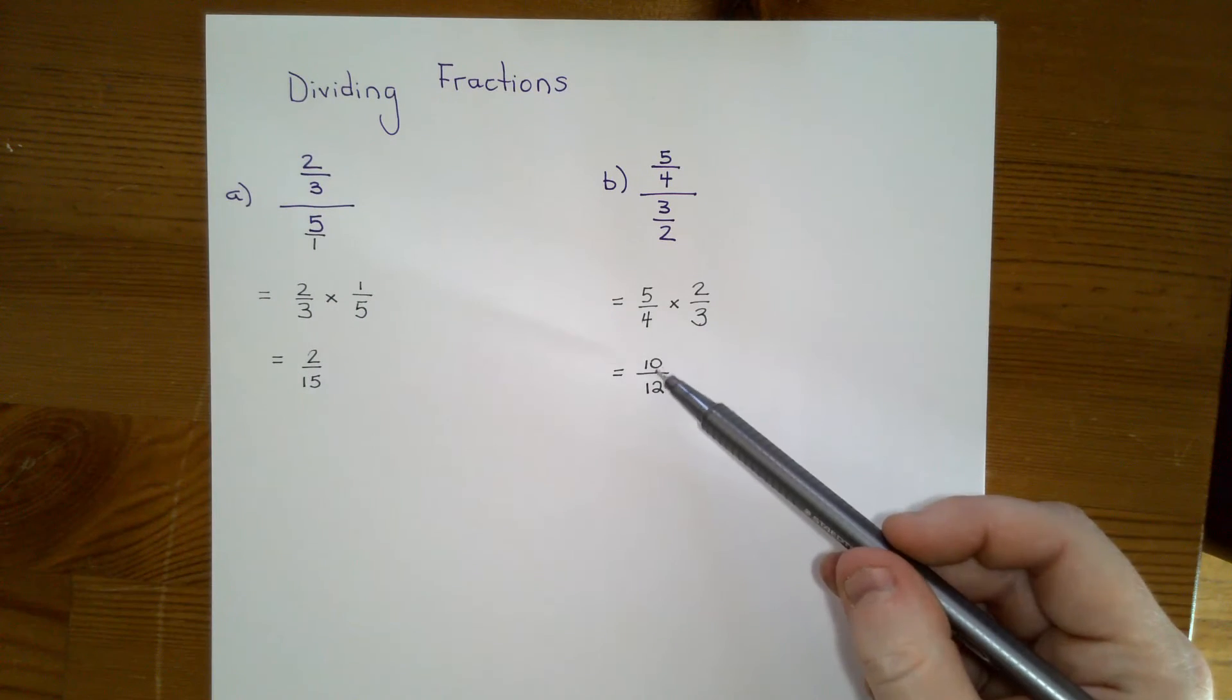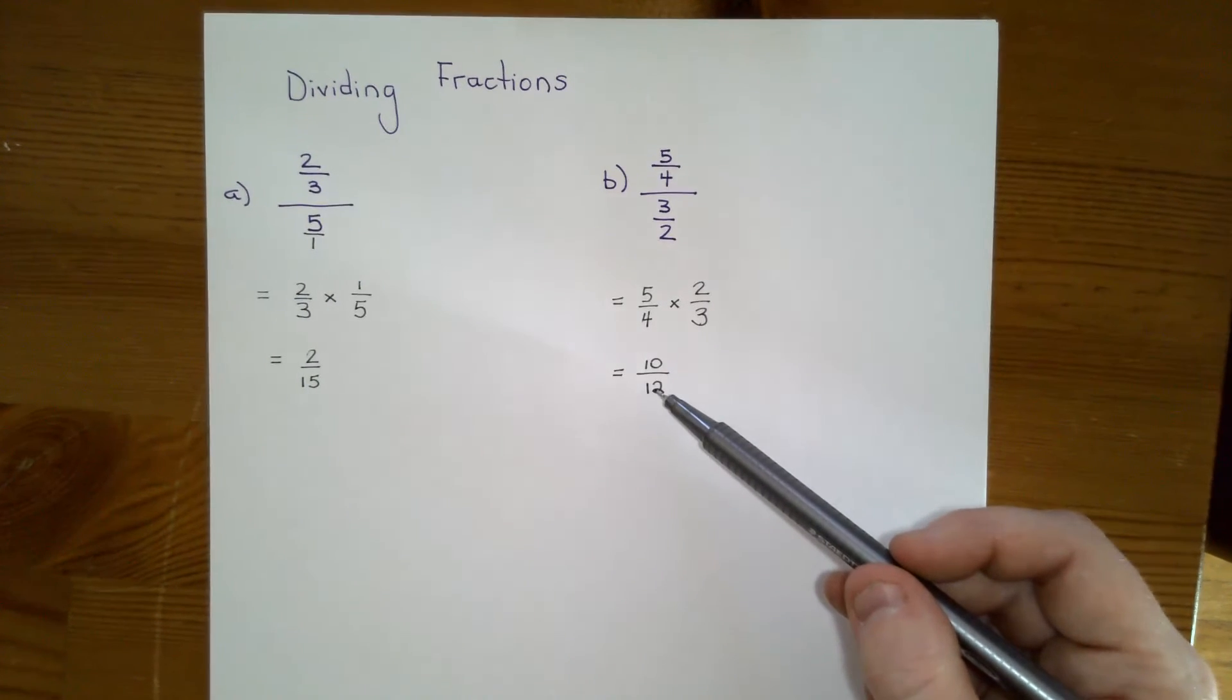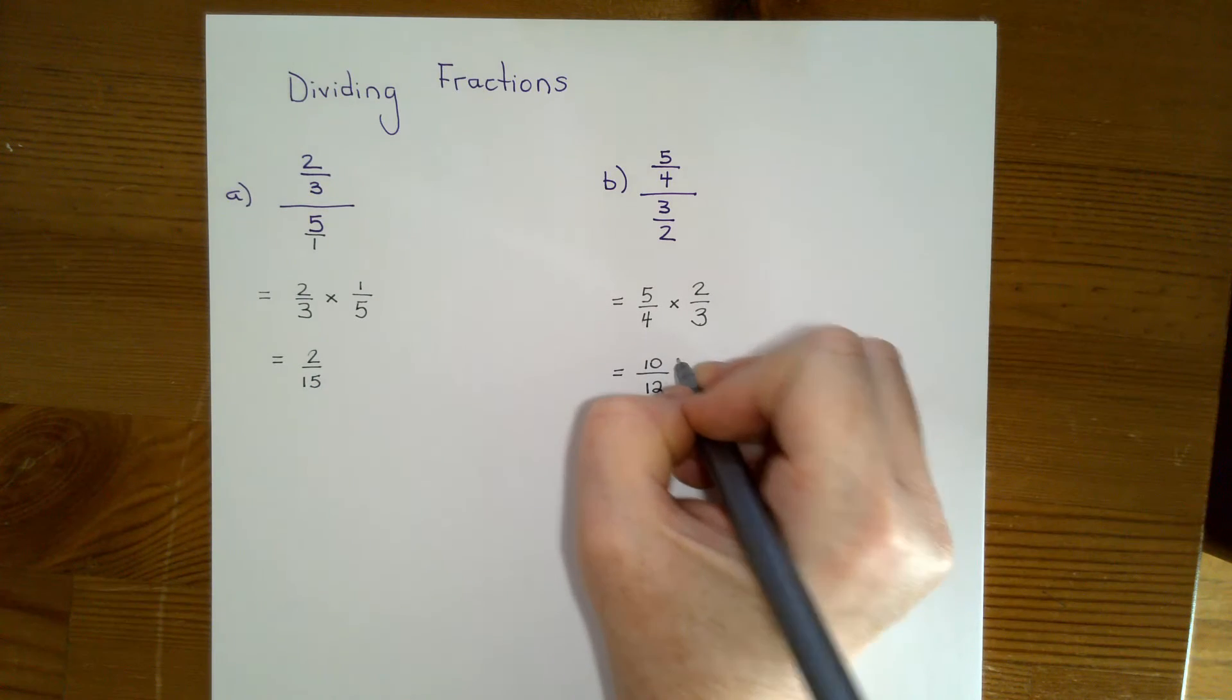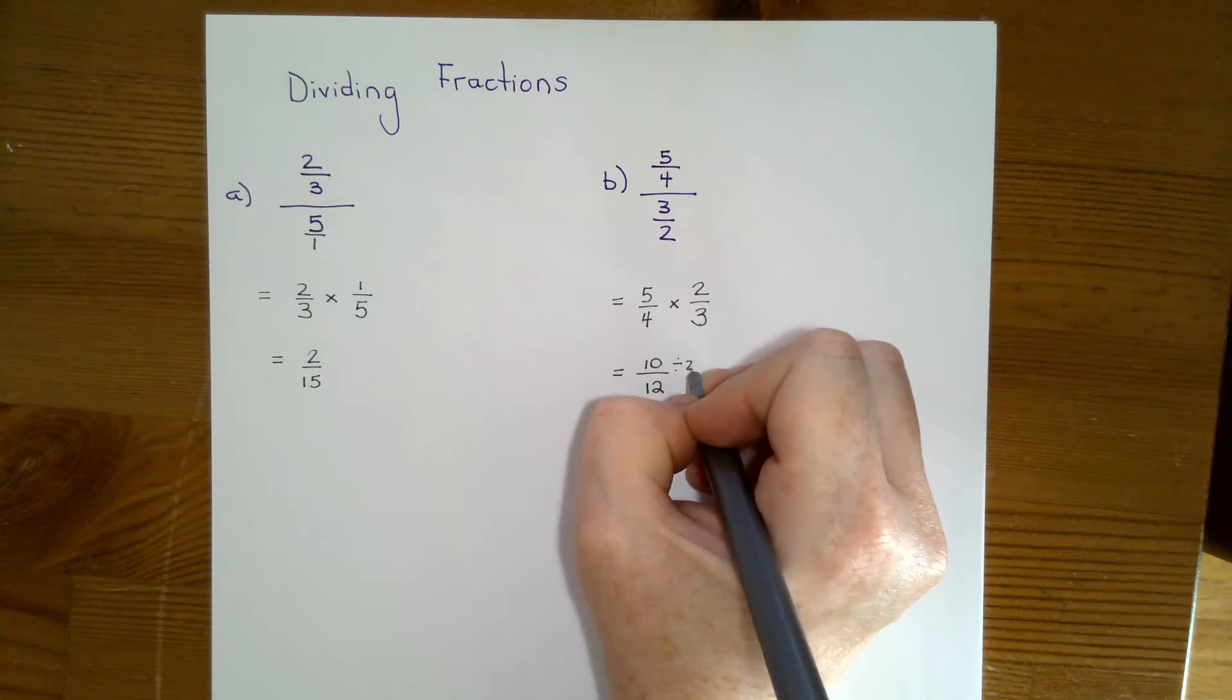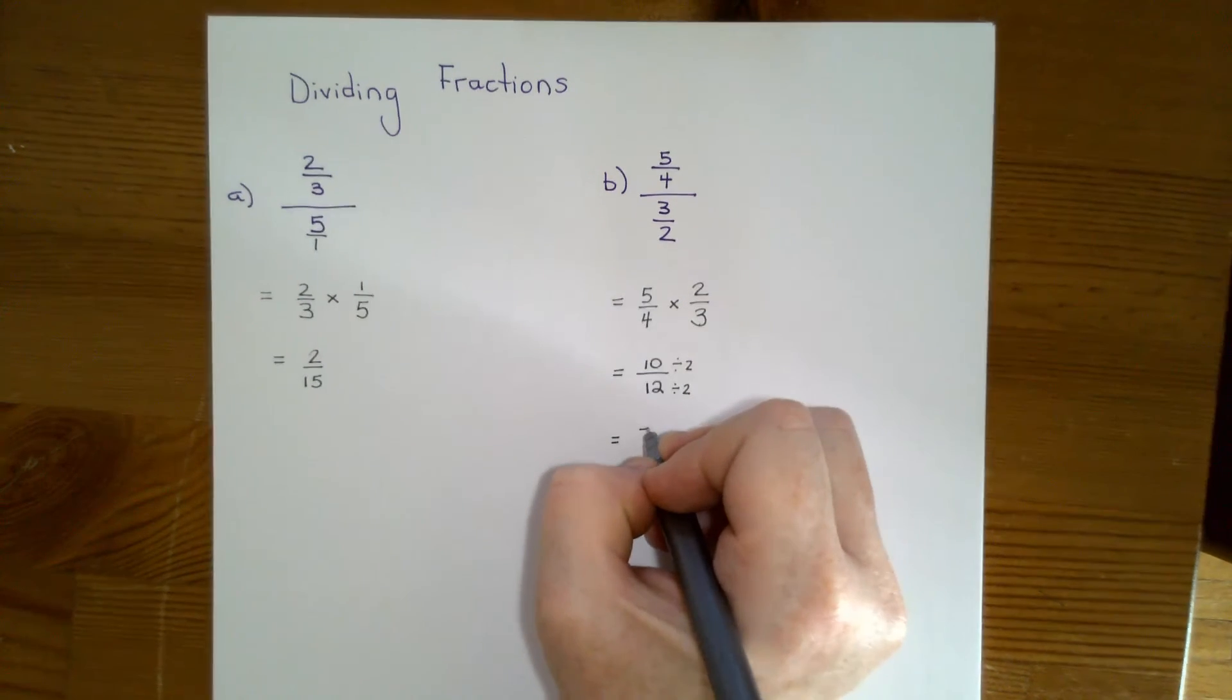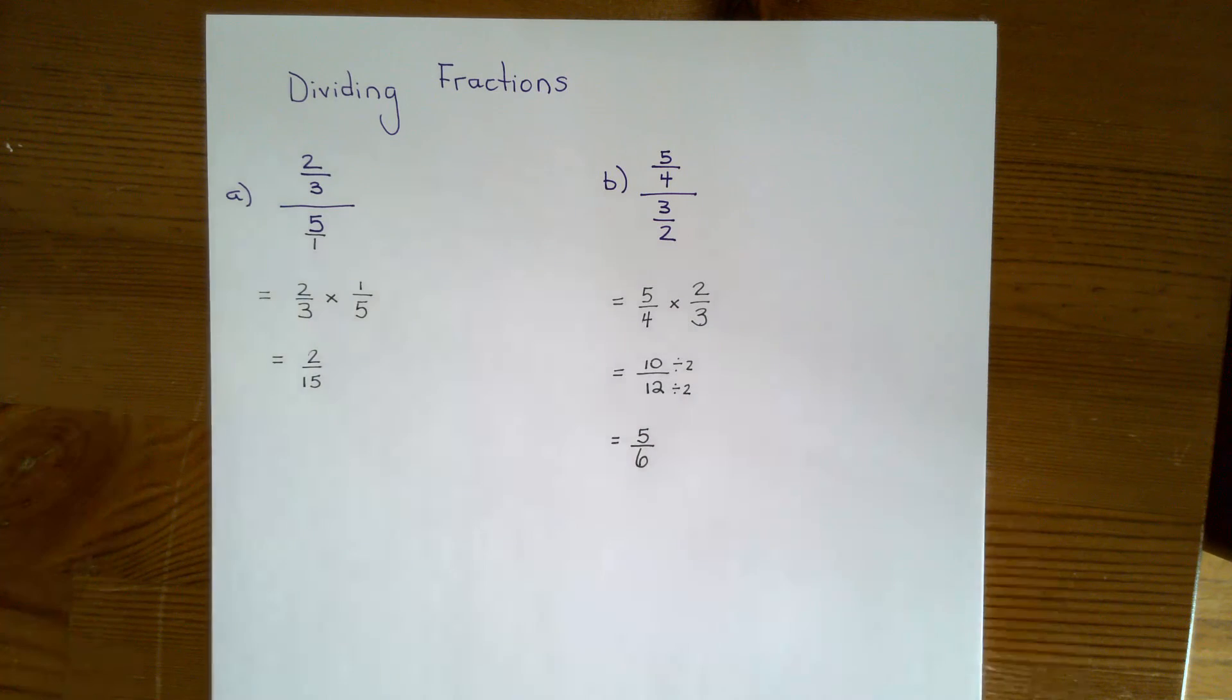When we look at this question, we realize that both 10 and 12 can be divided by two. So we want to write it in lowest common terms. I'm going to divide the numerator by two, which means I also have to divide the denominator by two. 10 divided by two is five and 12 divided by two is six. So now I have my fraction in lowest common terms.